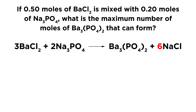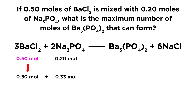Now this is a balanced chemical equation, which means we're able to make stoichiometric calculations. We have 0.5 moles and 0.2 moles of the reactants respectively. Let's take each compound and see how much of the other compound would be needed to react completely. Taking all 0.5 moles of barium chloride — we have a three to two ratio, so two-thirds as much sodium phosphate will be needed. That means 0.5 moles of barium chloride will need 0.33 moles of sodium phosphate to react completely.